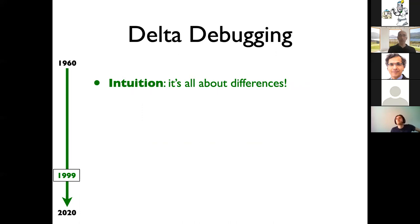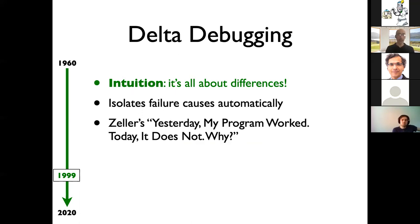The next breakthrough technique, in my opinion, is delta debugging. The intuition, the way I like to put it, is that it's all about differences. The idea came from Andreas Zeller, who wanted to do automatic isolation of failure causes. If you have something that works and something that doesn't — like subsequent versions of a program or different versions of an input — you can automatically go from one to the other using a kind of binary search to find the problem.